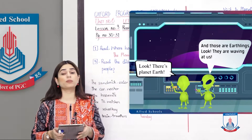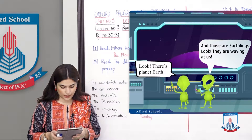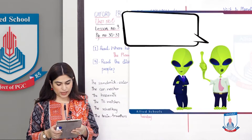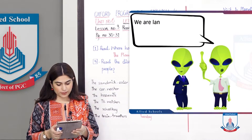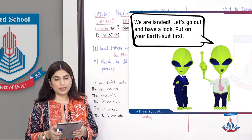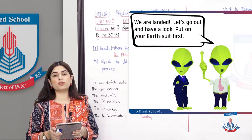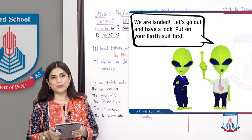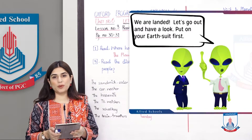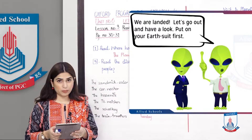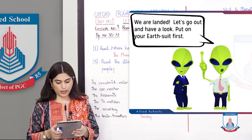'We have landed. Let's go out and have a look. Put on your earth suit first.' This means that the aliens — what did they do? They wear an earth suit — such clothes that they wear on Earth, on planet Earth.